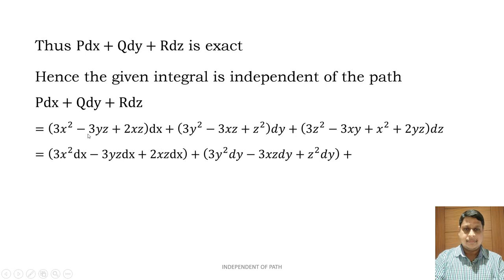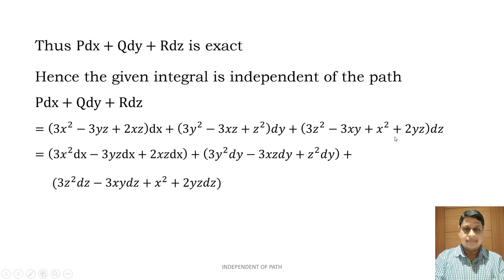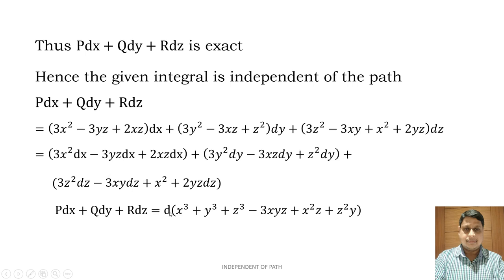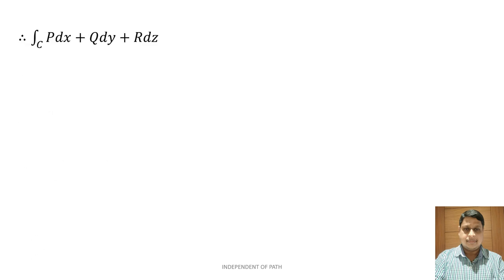Expanding and grouping the terms: 3x² dx + 3y² dy + 3z² dz − 3yz dx − 3xz dy − 3xy dz + 2xz dx + z² dy + 2yz dz. This simplifies to d(x³ + y³ + z³ − 3xyz + x²z + z²y). Therefore the integral equals [x³ + y³ + z³ − 3xyz + x²z + z²y] evaluated from (3,2,−1) to (−1,2,3).